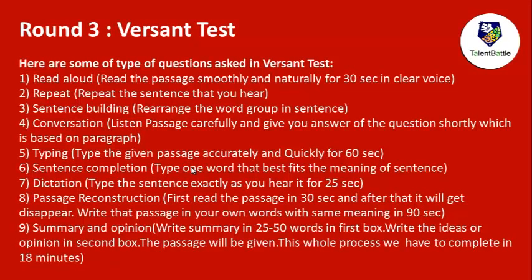In the Passage Reconstruction section, you first read a passage in 30 seconds, after which it disappears. You then have to write the passage again in your own words with the same meaning within 90 seconds, without seeing the original. Finally, the Summary and Opinion section requires you to write a summary of 25–50 words in the first box and your ideas or opinion in the second box, based on a given passage. The whole Versant process takes 18 minutes.